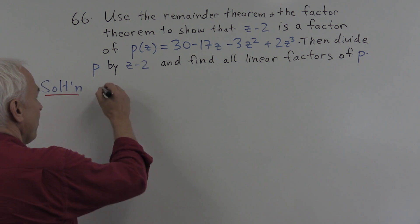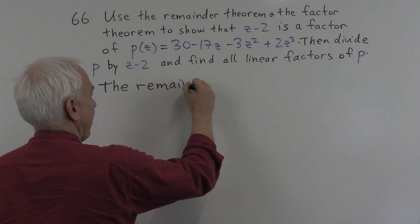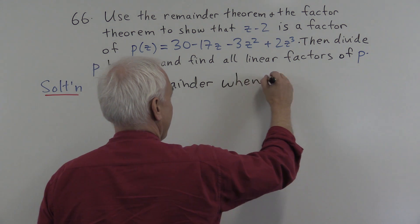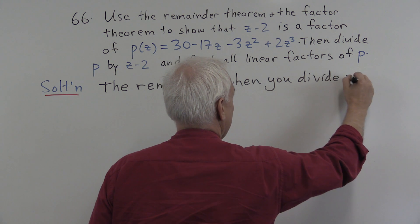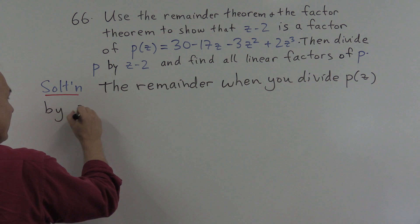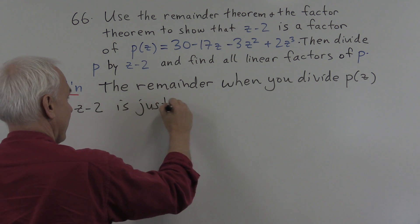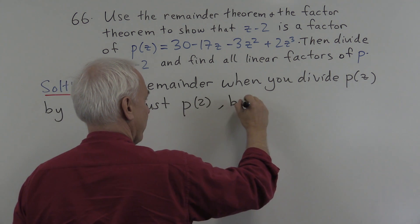All right, so the remainder when you divide p(z) by the factor z - 2 is just p(2). That's by the remainder theorem.